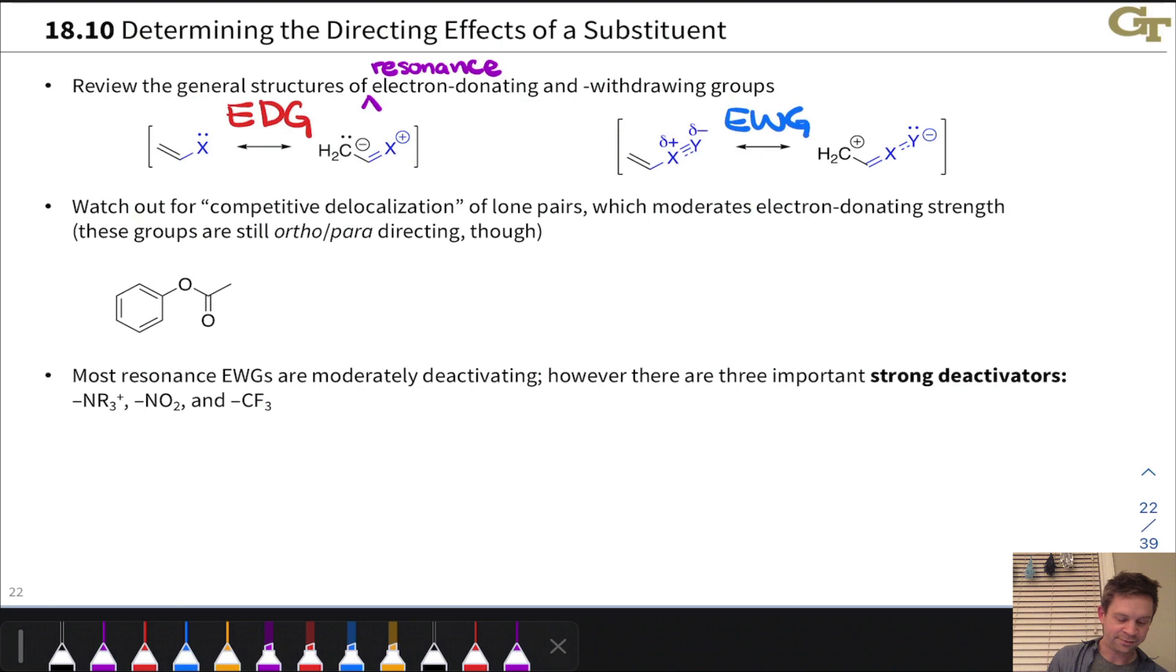So here, for example, we have an ester. You may be looking at this ester group and wondering, is this a donating or withdrawing group? On the one hand, it fits the structural pattern of a resonance-donating group with an atom with only single bonds and lone pairs directly attached to the benzene ring.